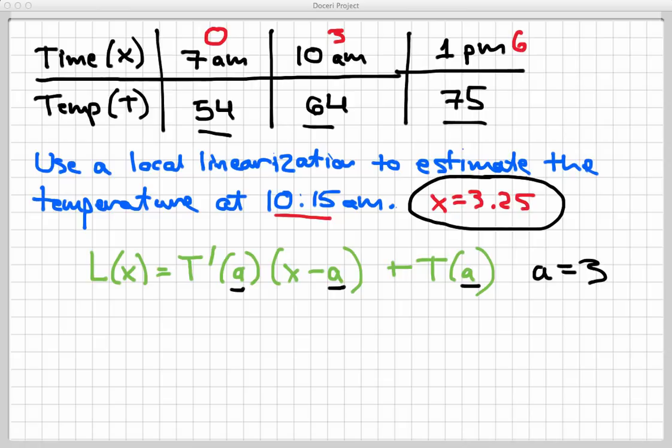Again, I could conceivably use any of these three time values to create a local linearization, but the farther I get away from the point where I'm going to eventually estimate, the worse the estimate is going to be. So we're going to let a equals 3 here in my formula. So that will make the local linearization T'(3) times (x - 3) plus T(3).